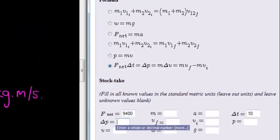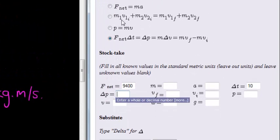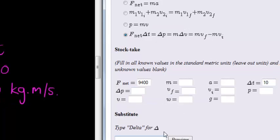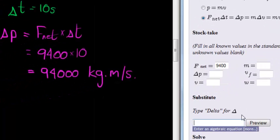So let's go substitute that, or enter that answer, there's our formula. Our net force is 9400, our change in time is 10. When we substitute, we're going to type delta out to get the delta.